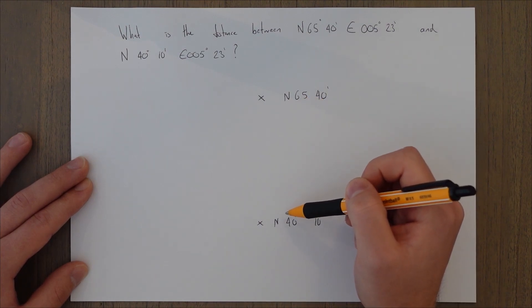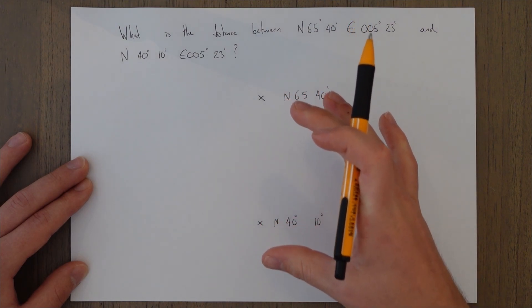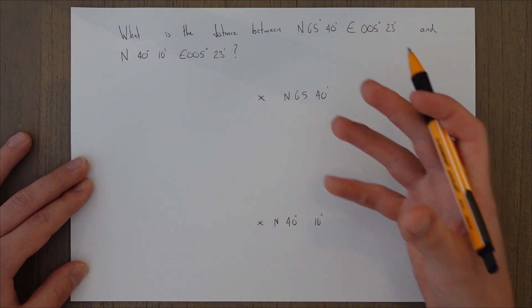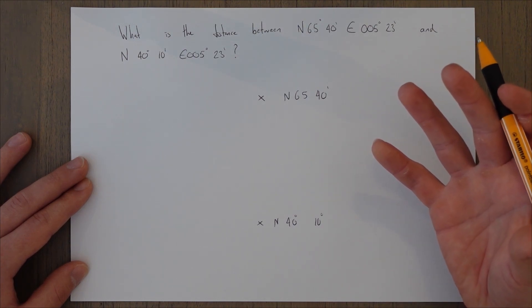But it could be the case that this one is south 40, and we'd have the equator in the middle. And we'd actually have to add them together, but you wouldn't figure that out unless you drew the picture. Or you probably could, but you're more prone to make mistakes, essentially.